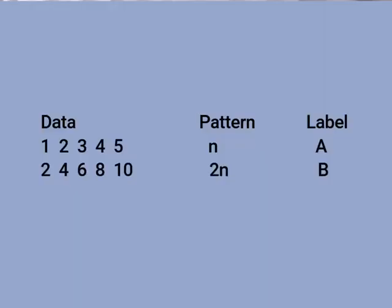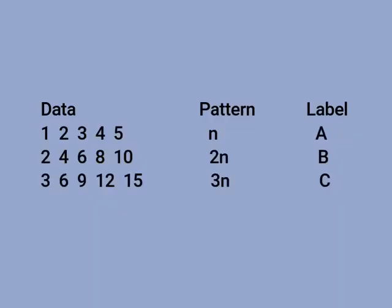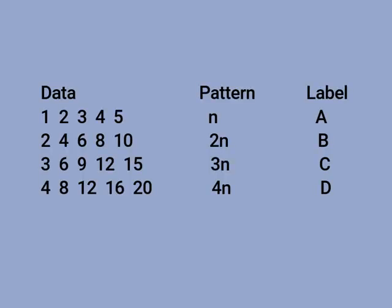Supposing then we had some more data which we can model as 2, 4, 6, 8 and 10. Fairly obviously the pattern would be 2N and we can label that B. Some more data: 3, 6, 9, 12 and 15. The pattern identified is then 3N and we can label that C. And then we have some more data: 4, 8, 12, 16 and 20. So fairly clearly the pattern is 4N and we might label that D. And do note that the identifying pattern is a compressed form of the data — using the pattern we can recreate the data.